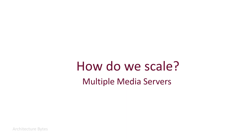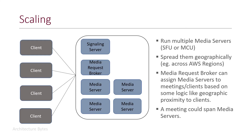A single media server cannot scale beyond a point, so we can use multiple media servers — these could be SFUs or MCUs. In addition, we have a media request broker. Clients need to know which media server to connect to, and this is where the media request broker comes in. It assigns meetings and clients to media servers based on some logic, such as geographic proximity to clients. Media servers can be spread geographically — for example, if you are using AWS cloud, you would have media servers across regions. With a suitable implementation, you could even have meetings span across media servers, which helps us scale massively.